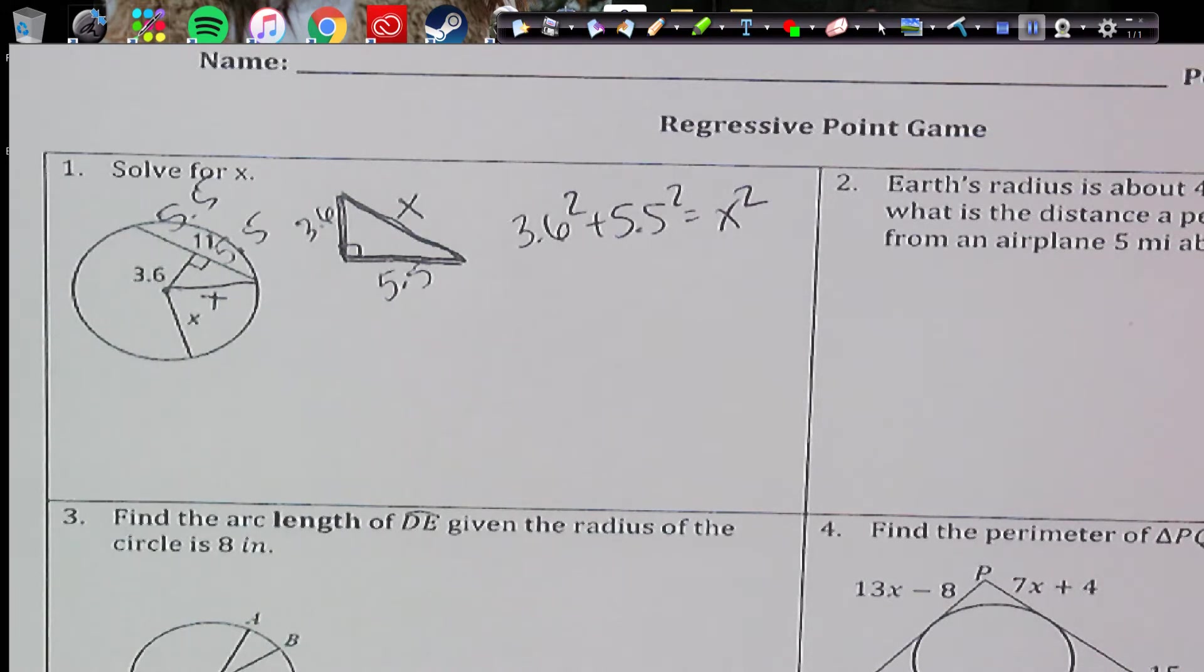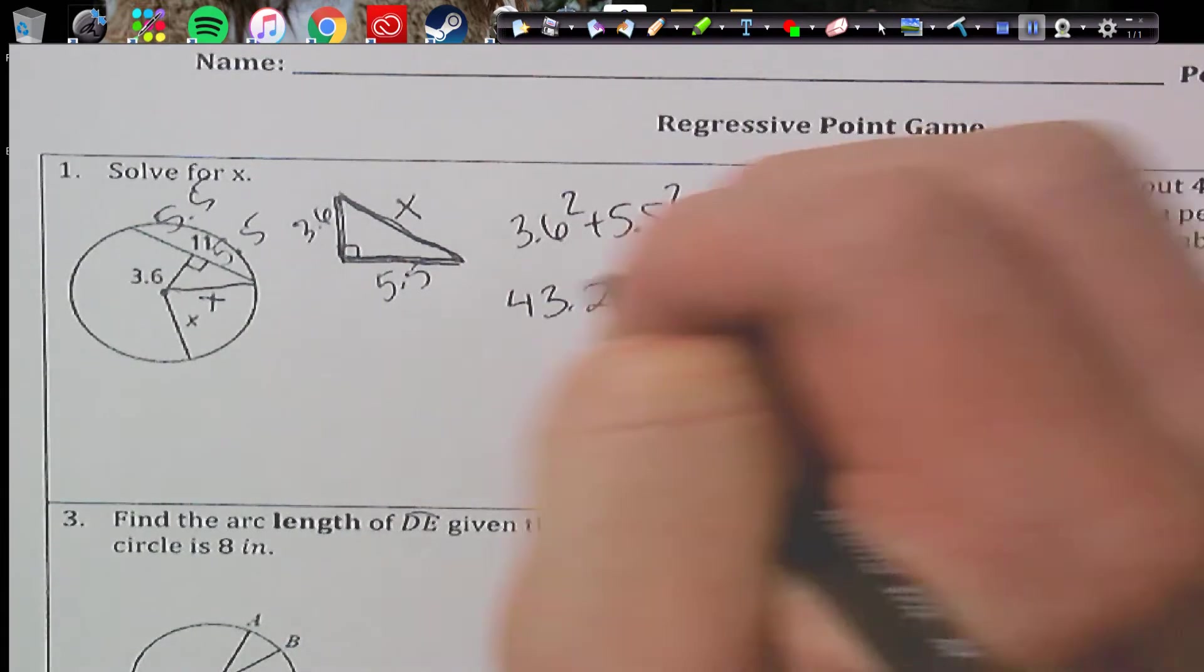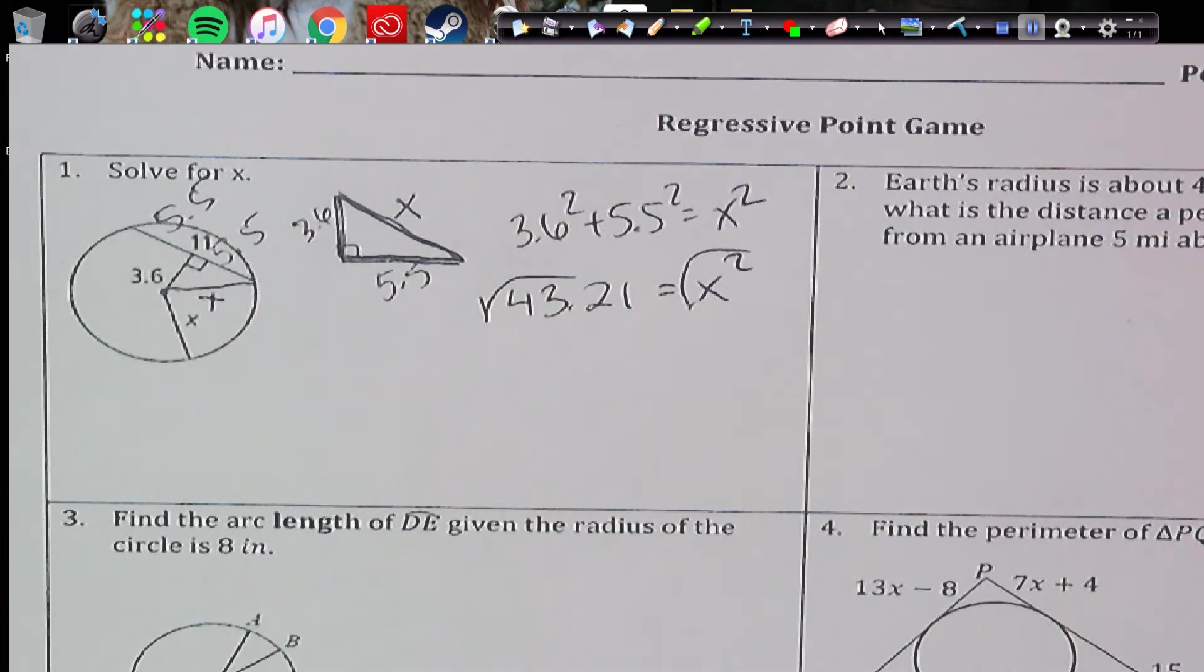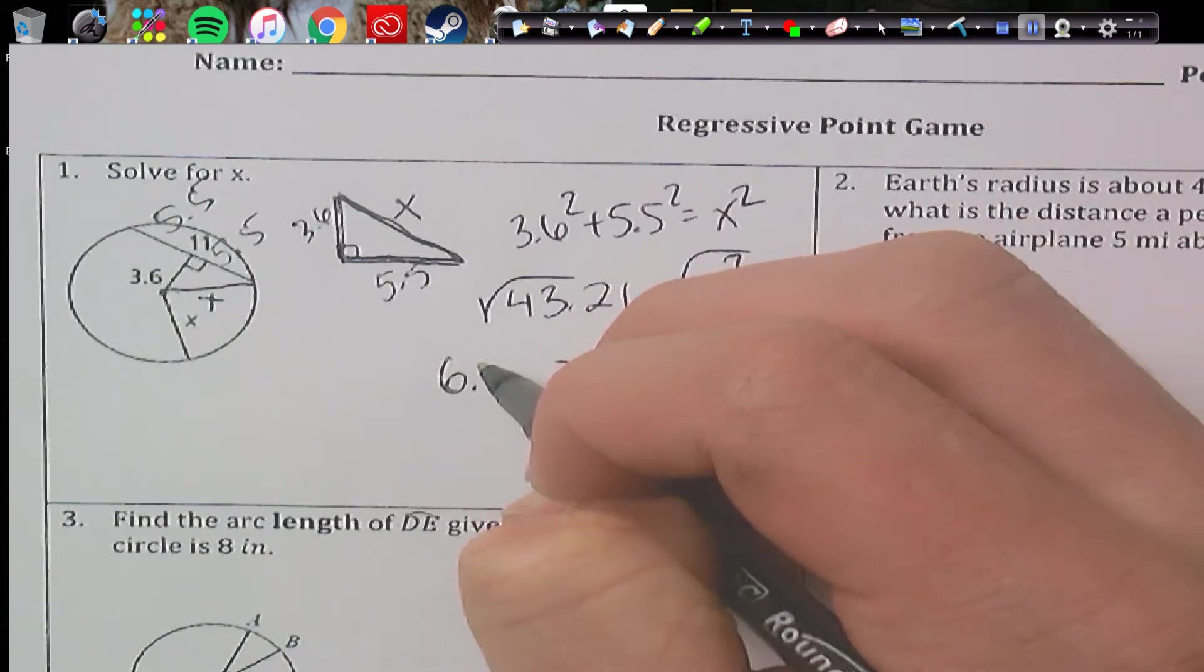So 3.6 squared plus 5.5 squared is going to give us 43.21. And then we just take the square root of that. And we're going to get x equals 6.57.